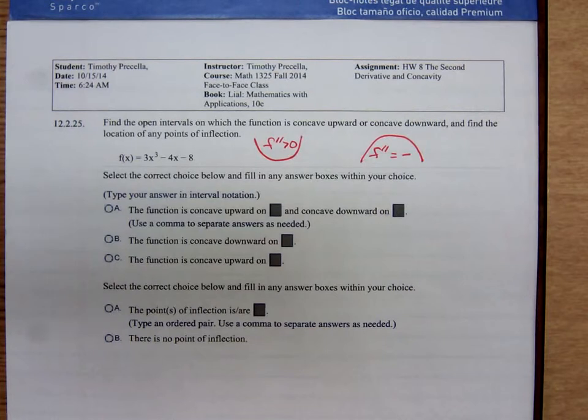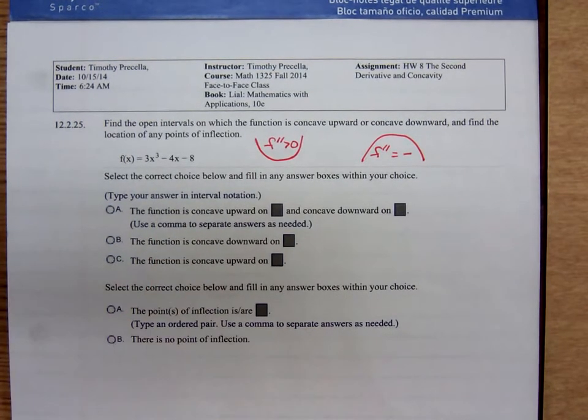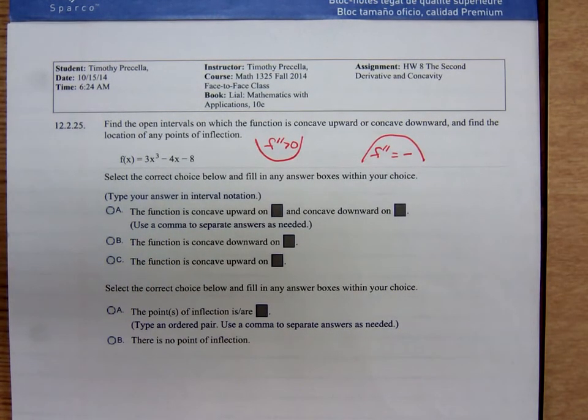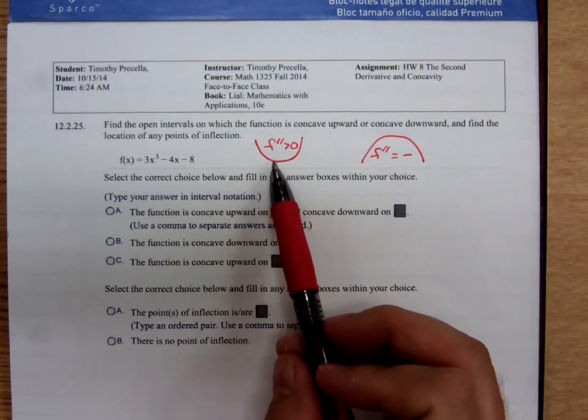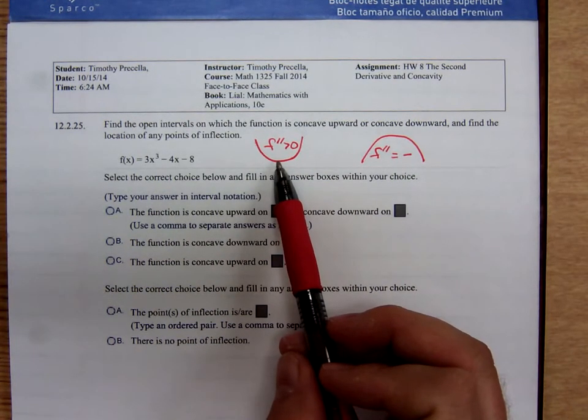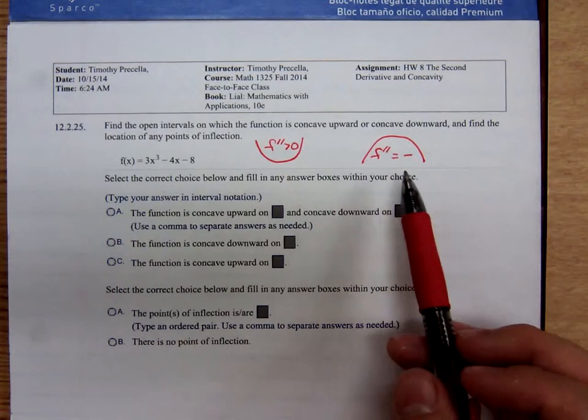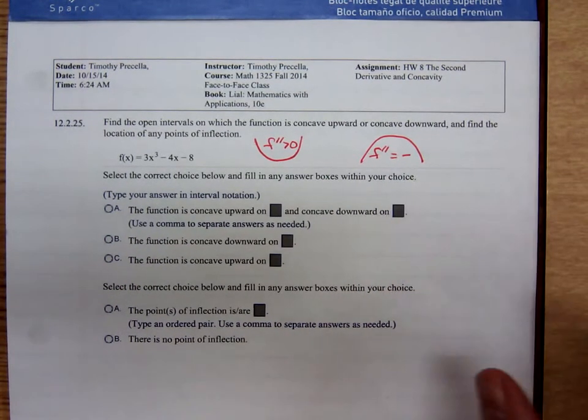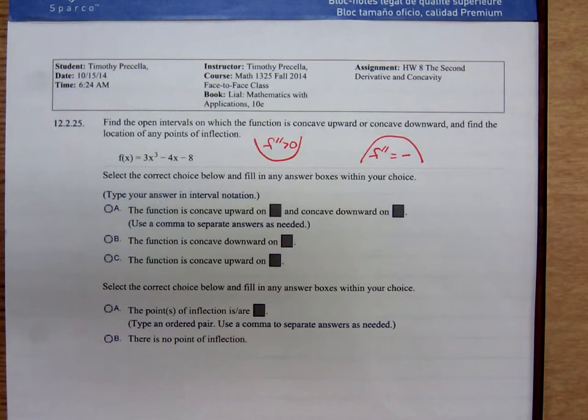We have the function f(x) = 3x³ - 4x - 8. Remember, if a graph is concave upward, the second derivative is positive. If a graph is concave downward on an interval, the second derivative is negative.